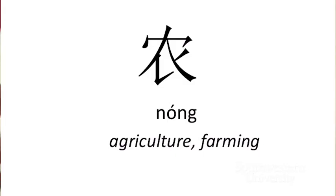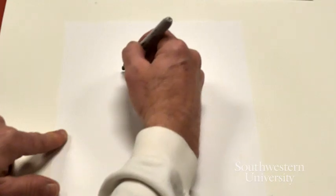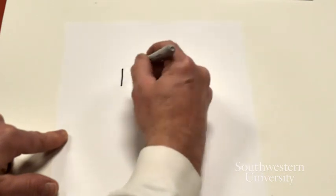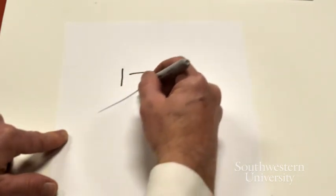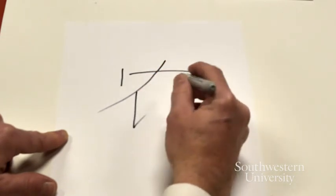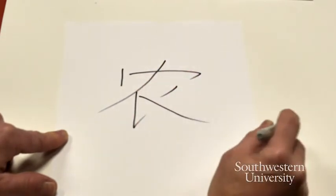Nong. This is originally a depiction of people working in the fields in the morning. So in the morning. So farmers are the ones that get up early and go into the fields. Dian, heng, go, pie, shu, go, pie, na.